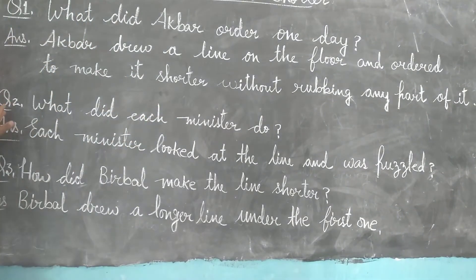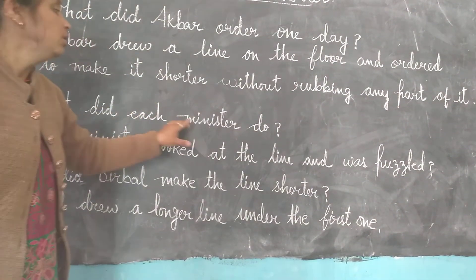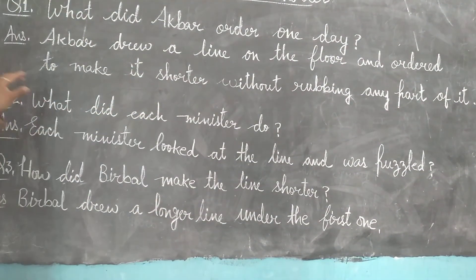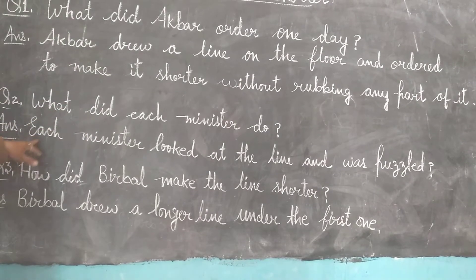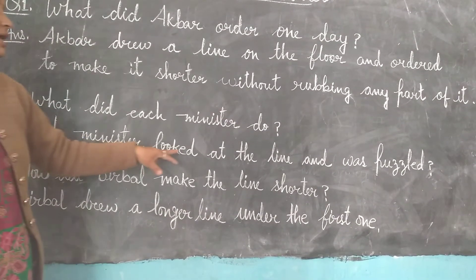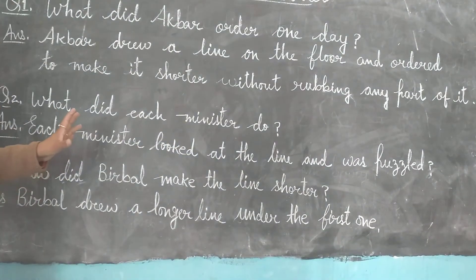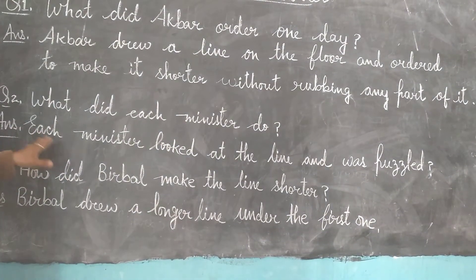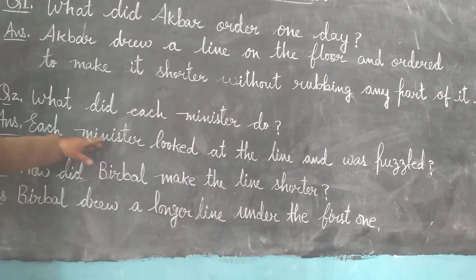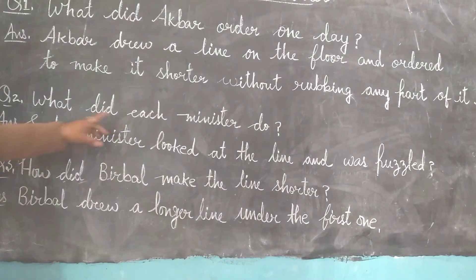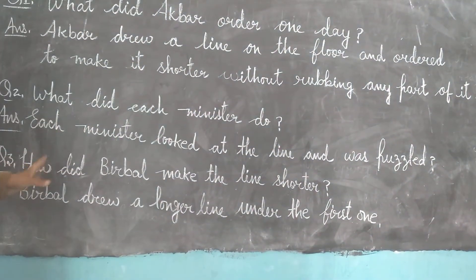Question number 2: What did each minister do? Each minister looked at the line and was puzzled. Puzzled means confused, okay?